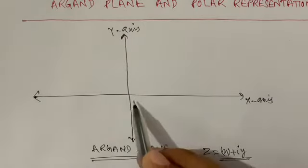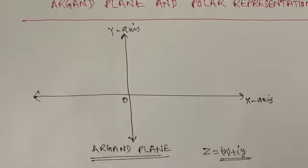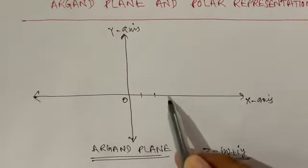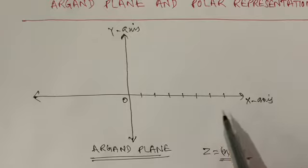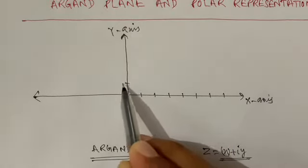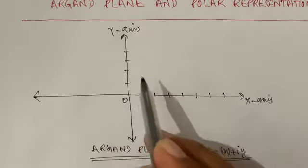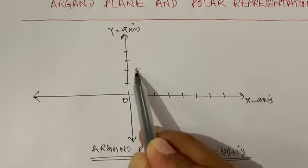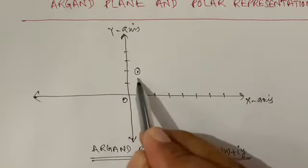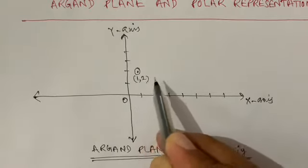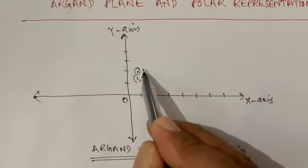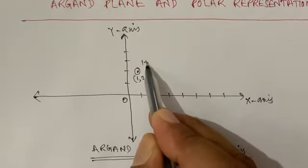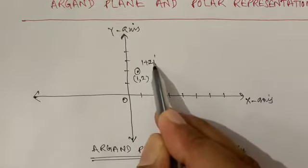Just like any coordinate system, we mark units here — one, two, three, and so on. For example, if we take a point at coordinate (1, 2) on the coordinate plane, then in complex number terms it represents 1 + 2i.